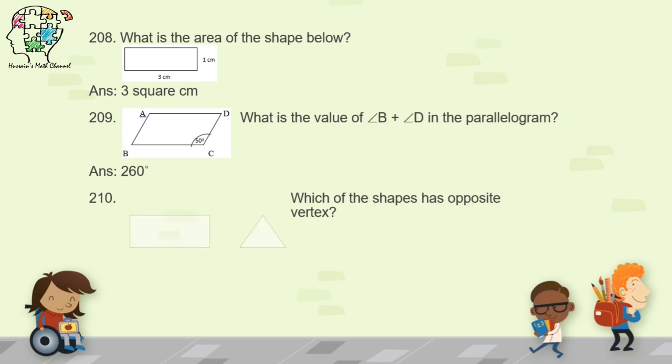Question 210: two figures are given — a rectangle and a triangle. The question asks which shape has an opposite vertex. In a triangle, the opposite of a vertex is a side, not another vertex. So the shape that has an opposite vertex is the rectangle.